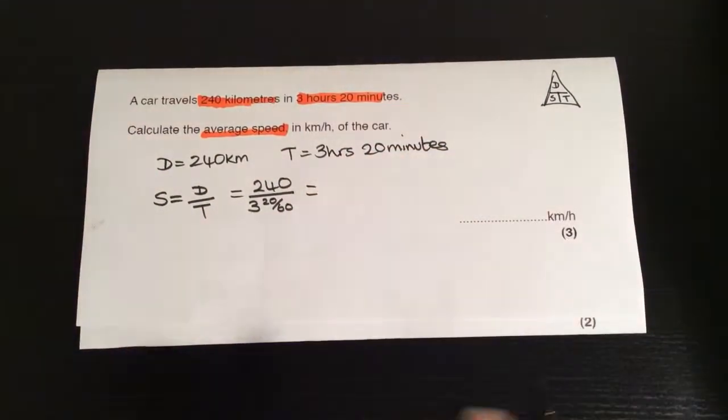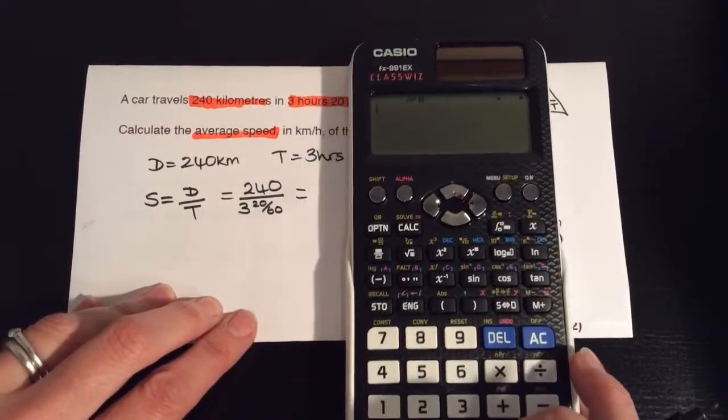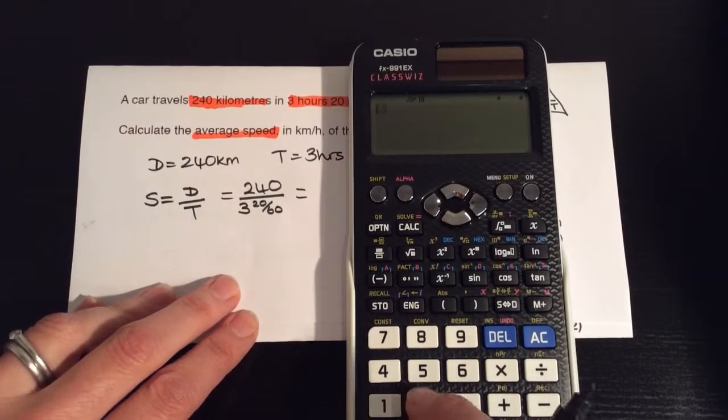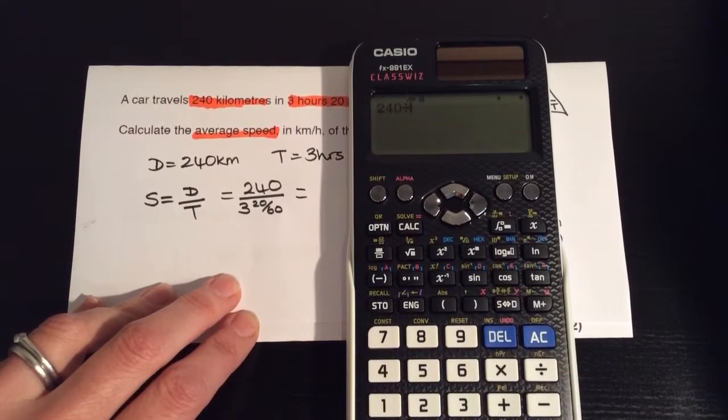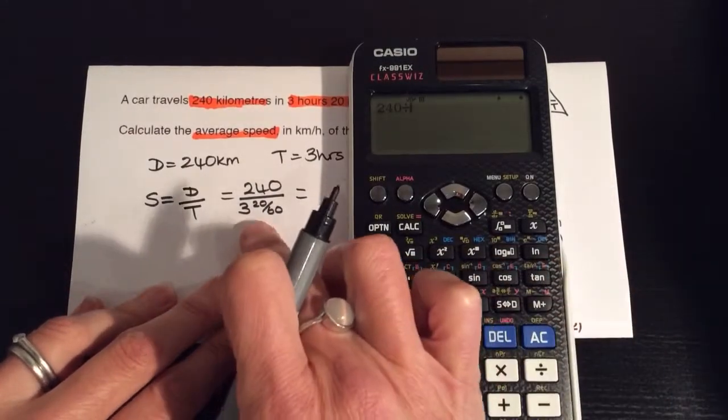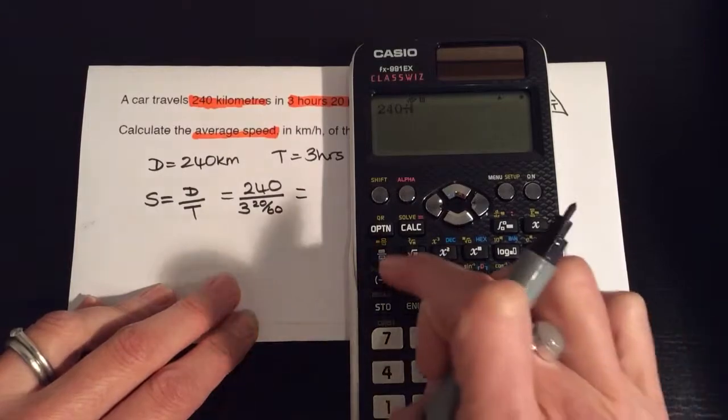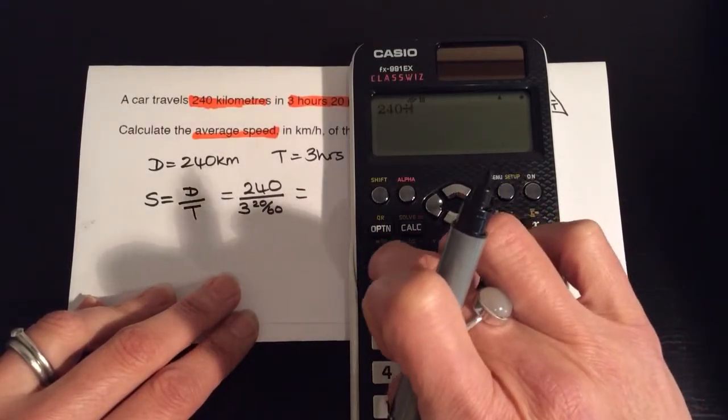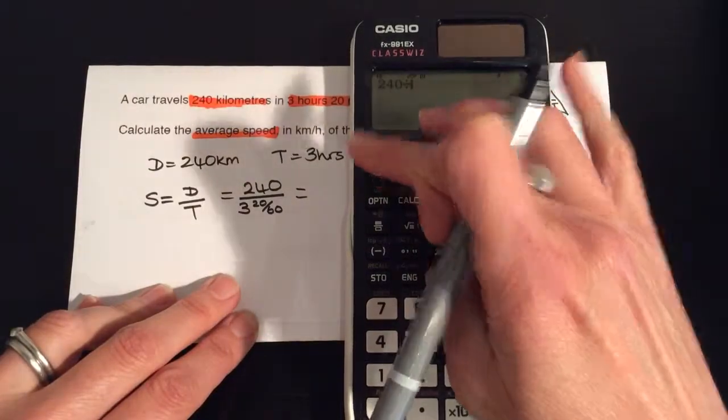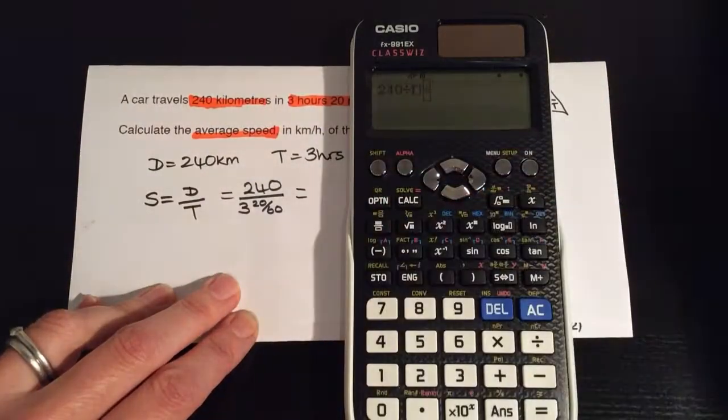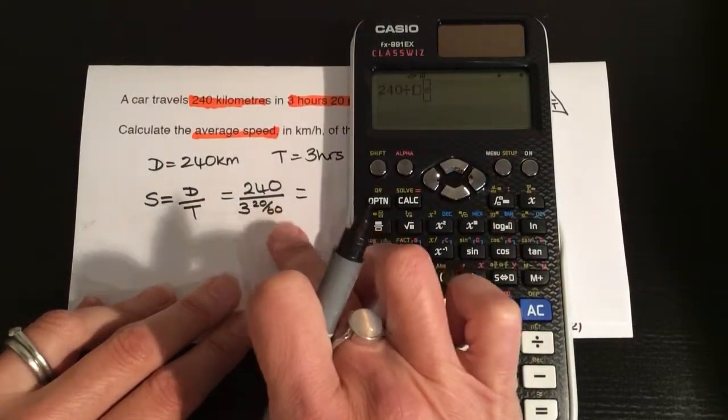And you can put that into your calculator. So 240 divided by—now the mixed number, because this is a mixed number made up of a whole number and a fractional part. The mixed number is in yellow above the fraction key. So if we press shift and the fraction key, that brings us up three little boxes that we can put in the 3, the 20, and the 60.